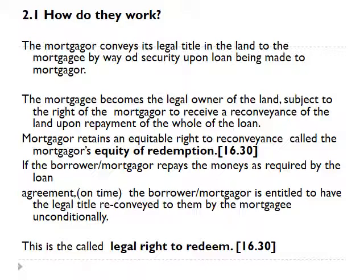The mortgagor's right to reconveyance is called the mortgagor's equity of redemption — slide 2.1. That expression is now used to describe, under torrens system land, the amount of equity the mortgagor has in the land after repayment of the mortgage. For example, if you have a block of land worth five hundred thousand dollars and you have a mortgage over that land for three hundred thousand, the mortgagor is said to have two hundred thousand dollars equity in their land. The concept came from this equity of redemption — the right to reconveyance to the mortgagor once the loan was repaid.